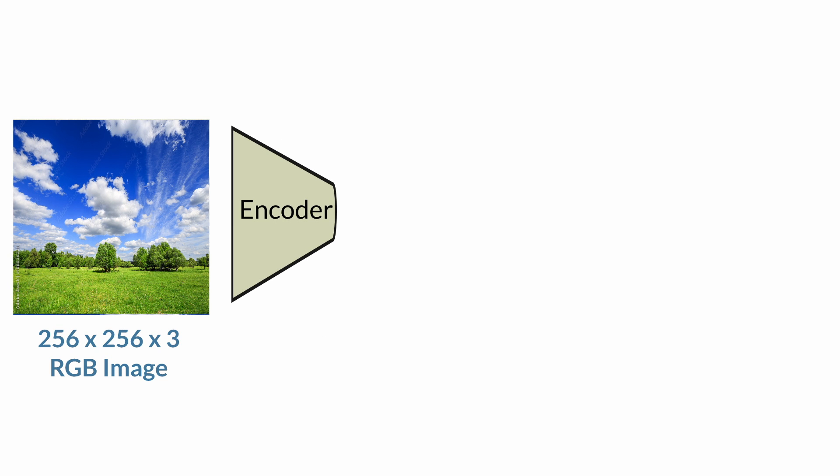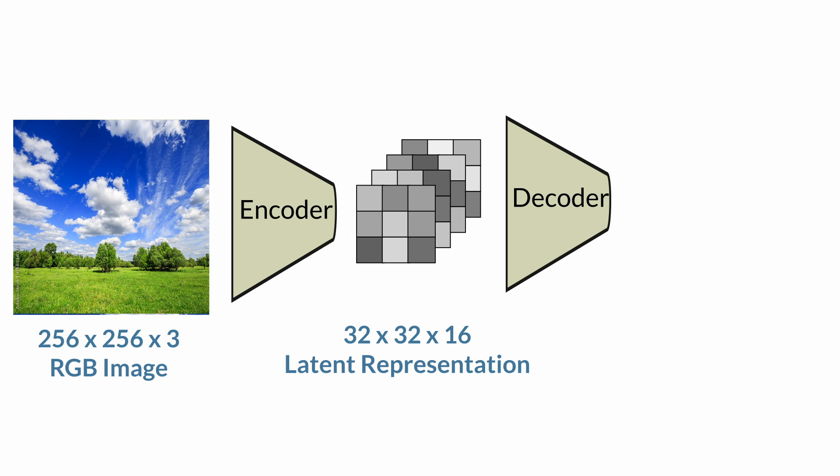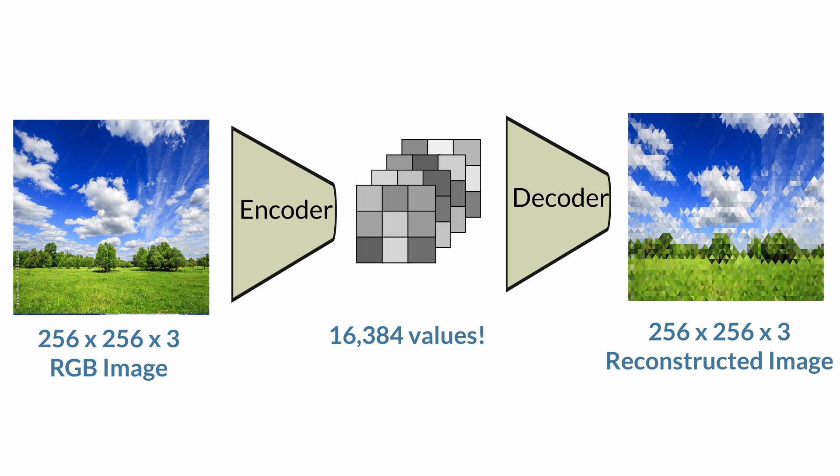We compressed our image by about 92%, representing it with a 32 by 32 by 16 tensor — but it still contains 16,384 unique values. The problem is that latent embeddings are continuous, meaning each value can take any real number. This makes it intractable for an LLM, because LLMs cannot output continuous latent embeddings. LLMs are good at outputting sequences of tokens, so we need to discretize or quantize our latent space to create a new vocabulary from frequently occurring symbols.